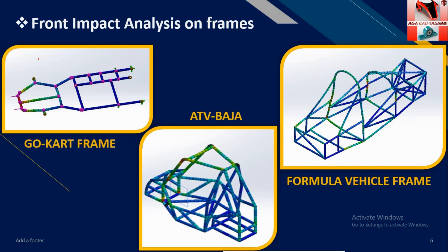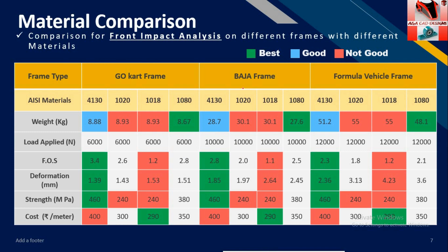I have prepared three frames — go-kart, Baja, and hybrid formula vehicle frame. I have taken front impact as the priority for this comparison, as front impact is the most common type that occurs. I have done front impact analysis on them and got these results. I have separately divided material grades and compared their properties for the same load. If you have watched my previous video, you will remember how I choose load for a frame for different analysis.